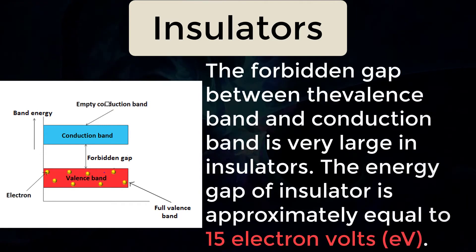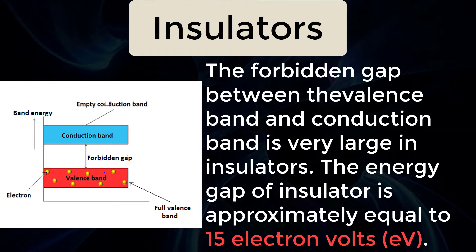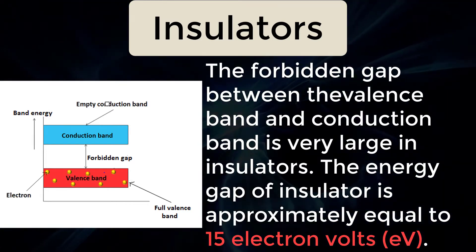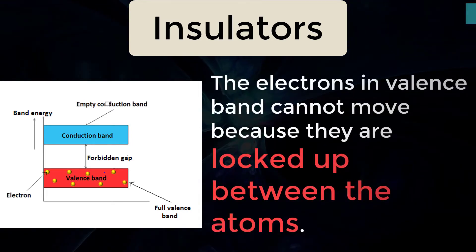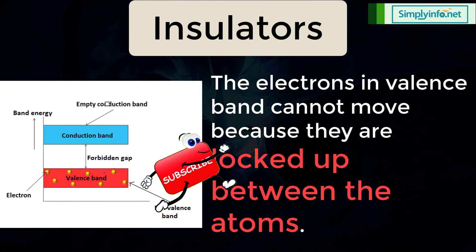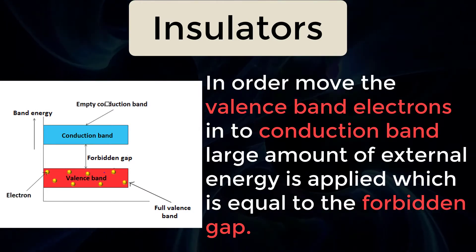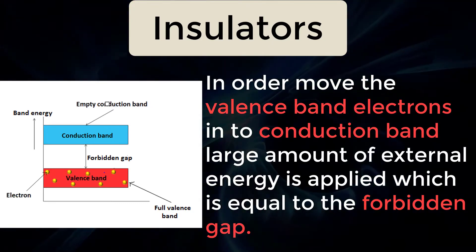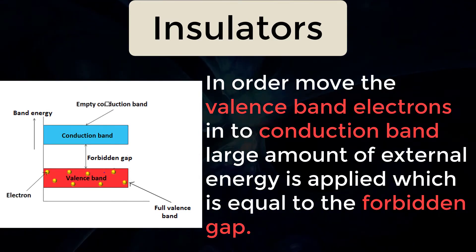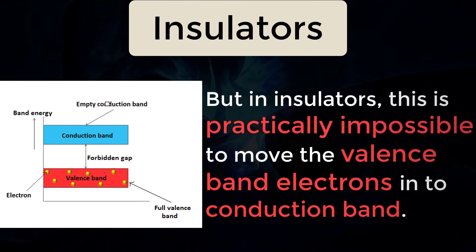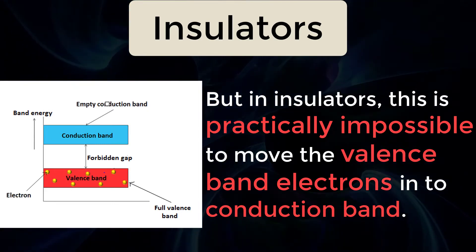The forbidden gap between the valence band and conduction band is very large in insulators. The energy gap of an insulator is approximately equal to 15 electron volts. The electrons in the valence band cannot move because they are locked up between the atoms. In order to move valence band electrons into the conduction band, a large amount of external energy equal to the forbidden gap must be applied. But in insulators, this is practically impossible.